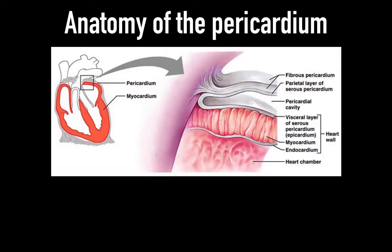The pericardial sac is composed of three layers: an outer fibrous layer and a folded-over serous pericardium. The closest analogy for the folding over is as if the heart was being pushed into a balloon, forcing the balloon to wrap around the heart. Normally there is about 50 milliliters of serous fluid between the two layers of serous pericardium, and none between the parietal and fibrous pericardium.